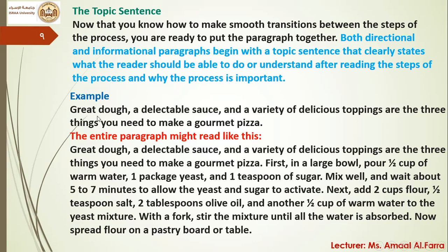Look at this example: 'Great dough, a delectable sauce, and a variety of delicious toppings are the three things you need to make a gourmand pizza.' Here, the topic is a gourmand pizza. In the controlling idea, you are adding the process steps — great dough, delectable sauce, variety of delicious toppings — that you are going to talk about in detail.